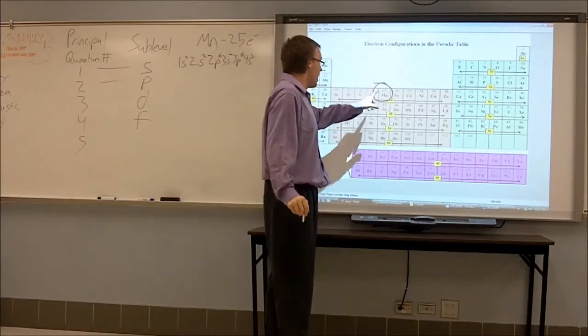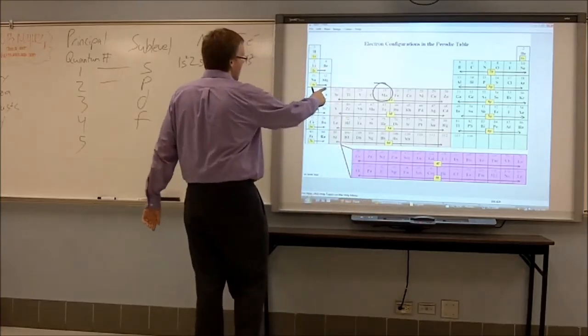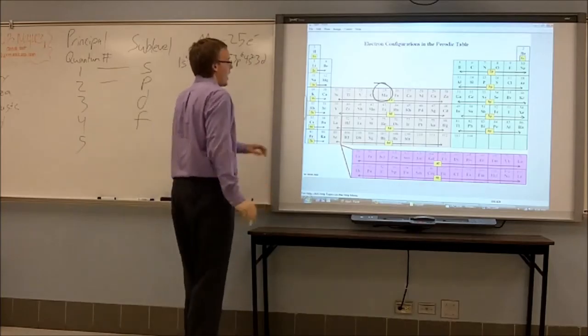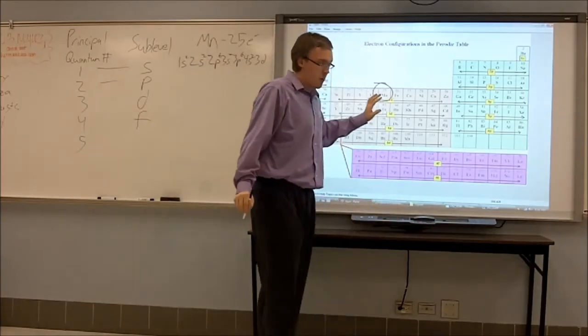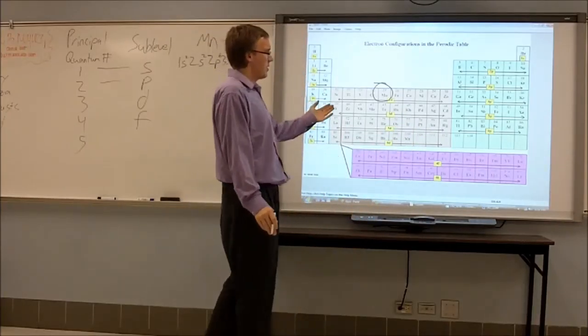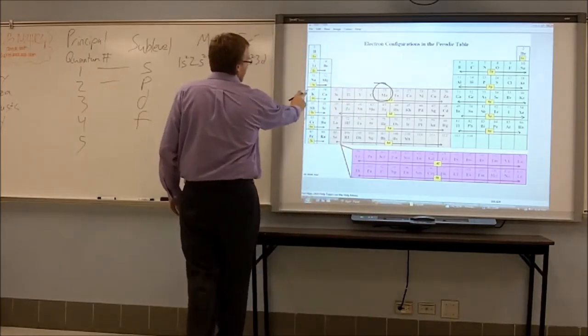Then we move down, start over again at four S two. And then we are going to go over, but we notice that we don't have to go all the way over because manganese is already about halfway through. So what we are going to write here is three D. We now hit the brown group as the D level.